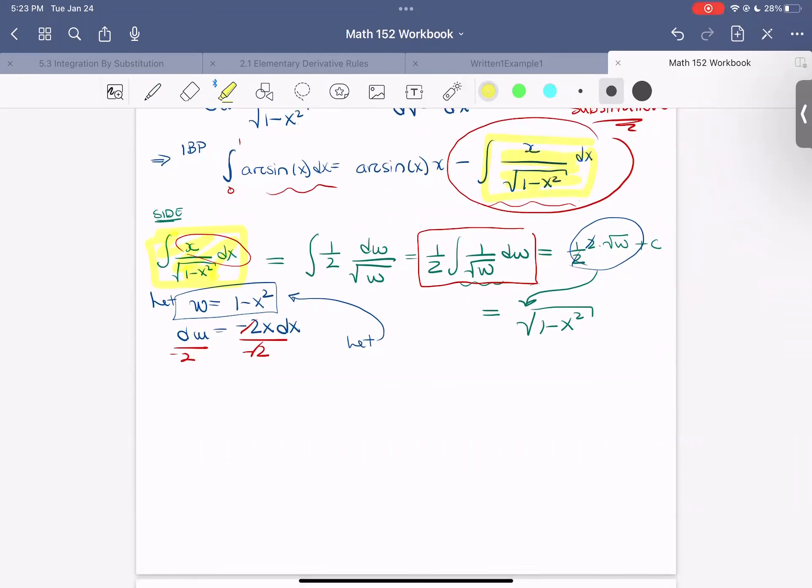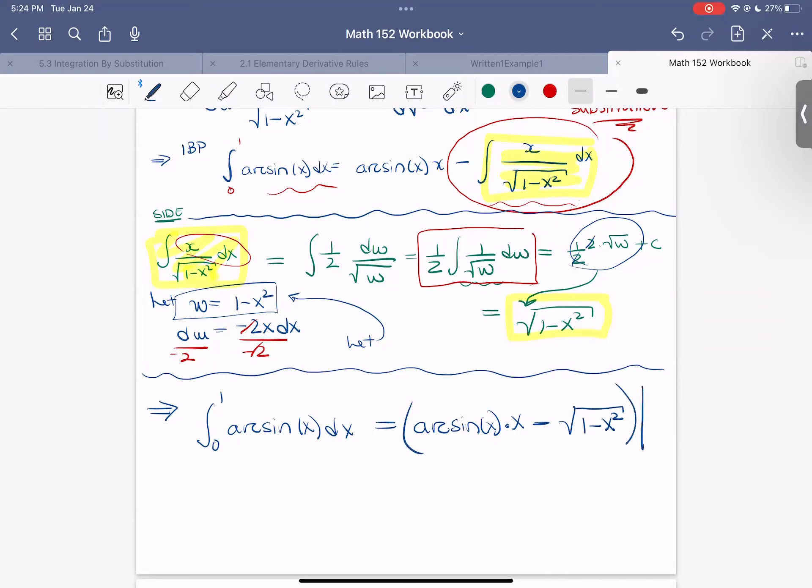So I'm going to just kind of box in this aside so we can stay a little bit organized. So that means our integral from 0 to 1 of arc sine of x dx becomes arc sine of x times x minus the integral of 1 minus x squared. And now we're evaluating this at 0 and 1. So rather than look at each term separately and evaluate at 0 and 1, I can just say I'm going to look at this whole expression and evaluate at 0 and 1. It's equivalent there. All right.